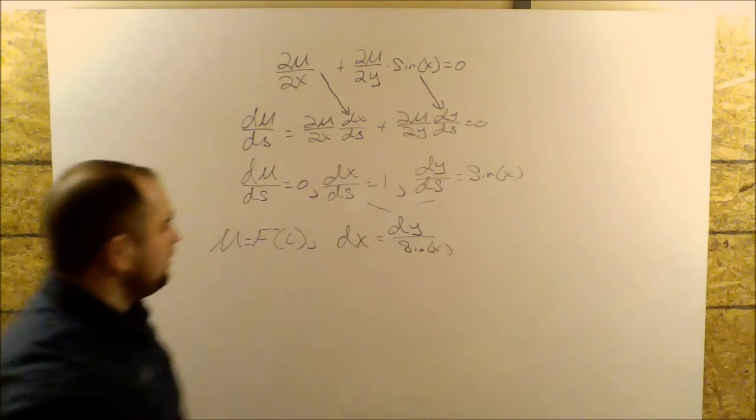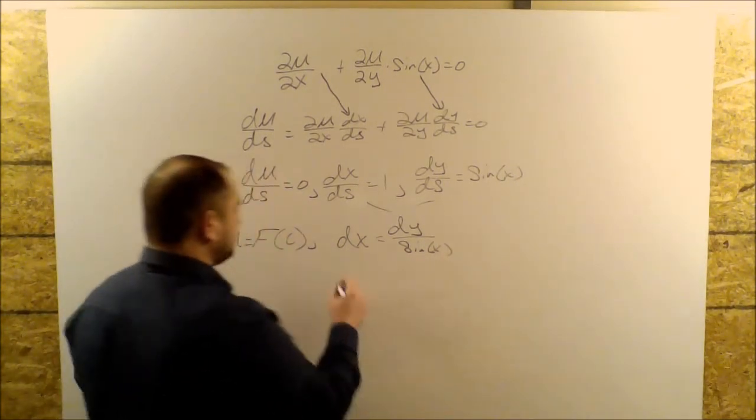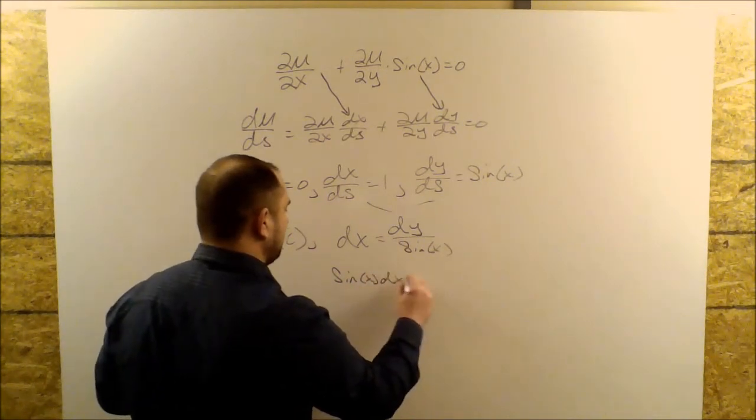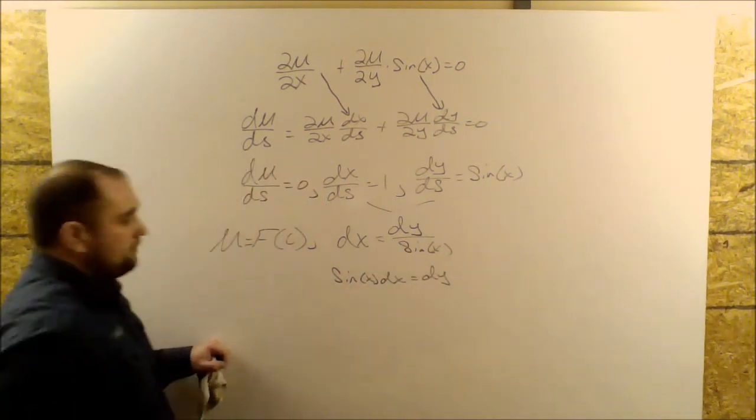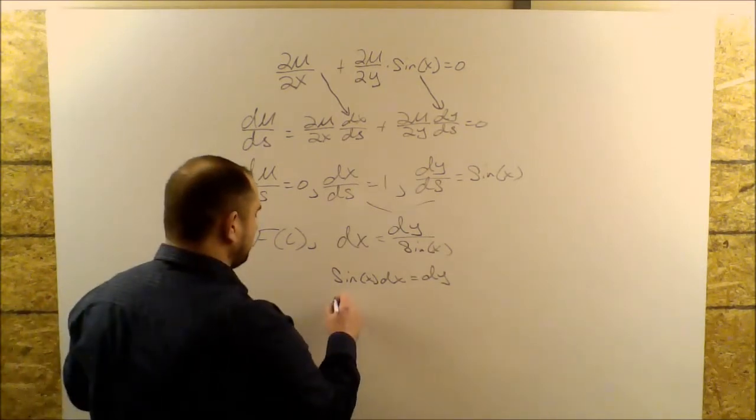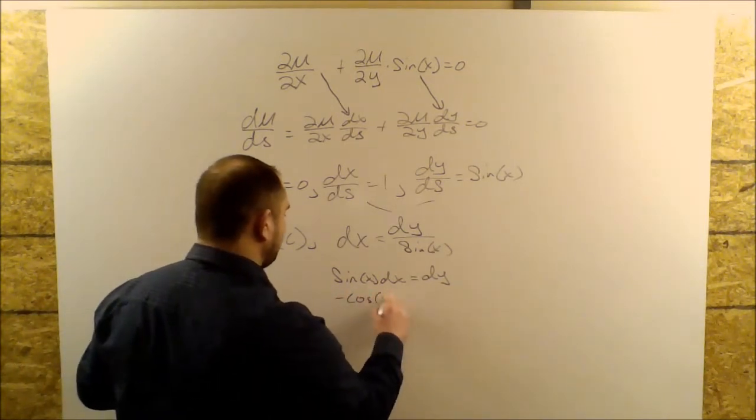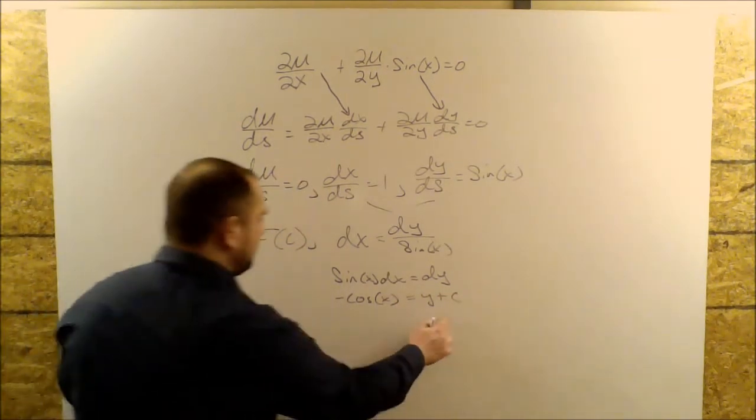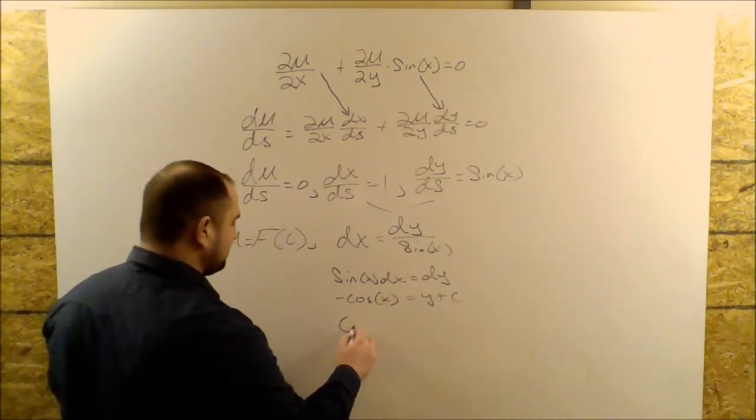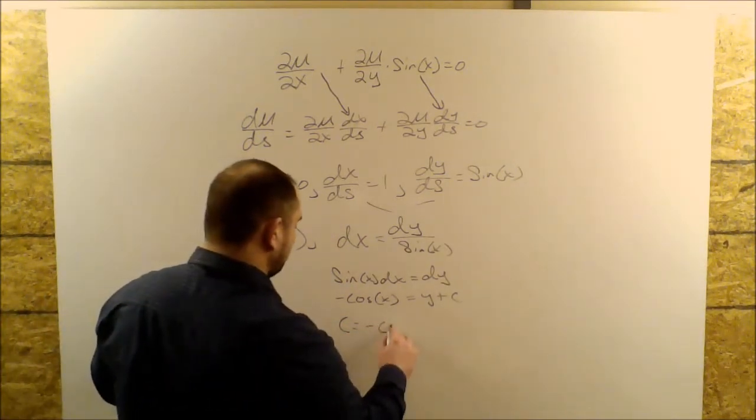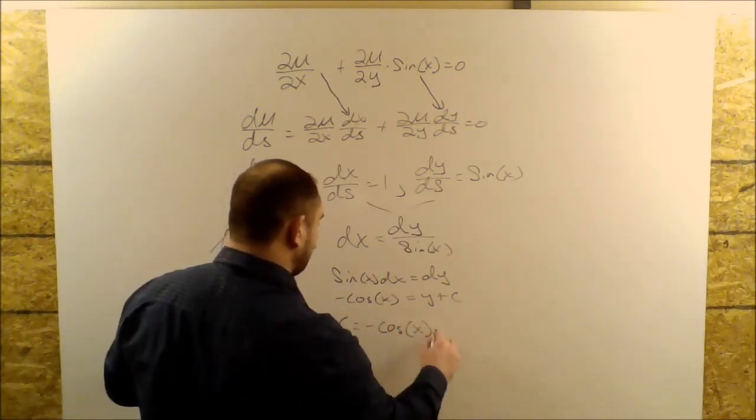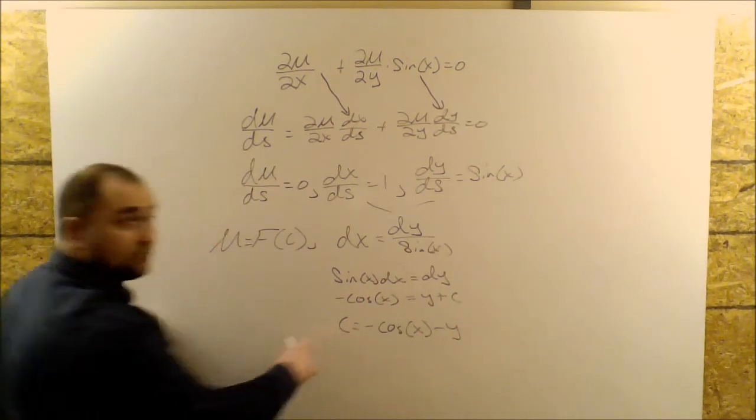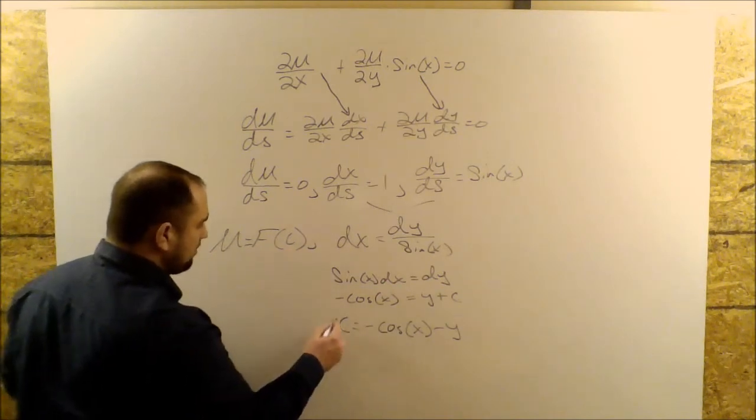Okay, now multiplying through by sine of X gives us sine of X dX is equal to dY. Integration gives us minus cosine of X is equal to Y plus C. Solving for C gives us C is equal to minus cosine of X minus Y. So this is the value of the constant up here.